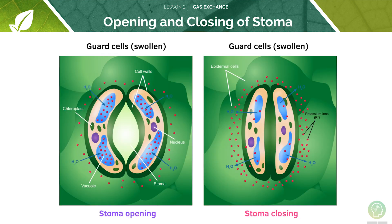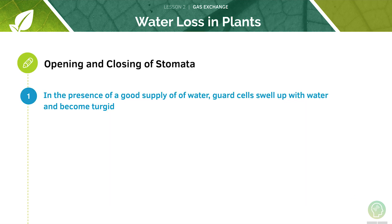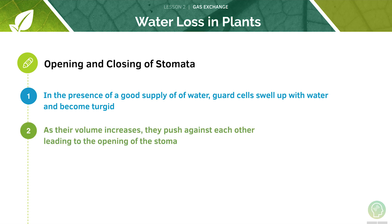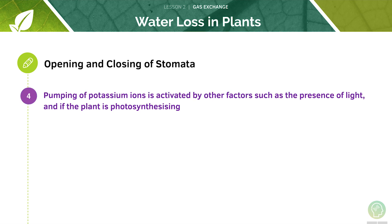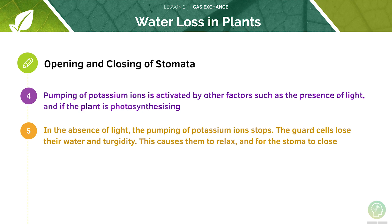Here we can see the stomata opening and closing. Stomata will open when the water supply is good — guard cells swell up with water and become turgid. As their volume increases, they push against each other, leading to the opening of the stoma. The turgidity of guard cells is caused by the pumping of potassium ions into the guard cells via active transport. Stomata will also close at night: the pumping of potassium ions is activated by factors such as the presence of light and whether the plant is photosynthesising. In the absence of light, the pumping of potassium ions will stop, the guard cells will lose their water and turgidity, causing them to relax and the stomata to close.